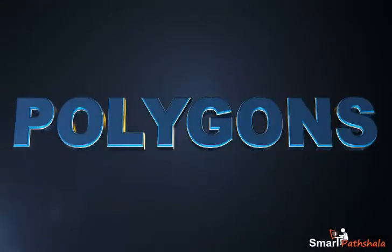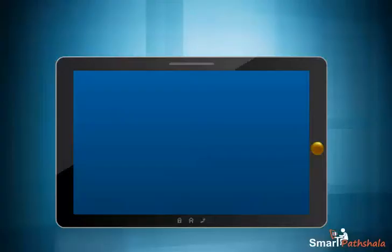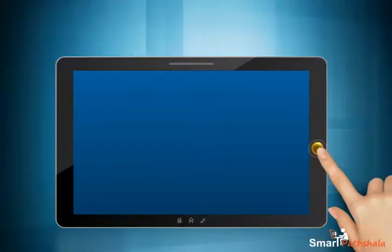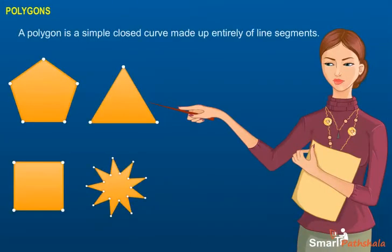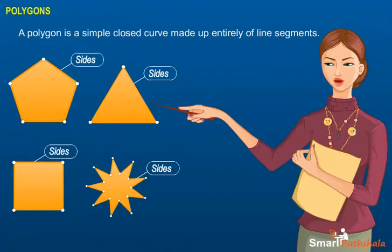Polygons. This module will give details about polygons. A polygon is a simple closed curve made up entirely of line segments. A polygon has at least three sides.